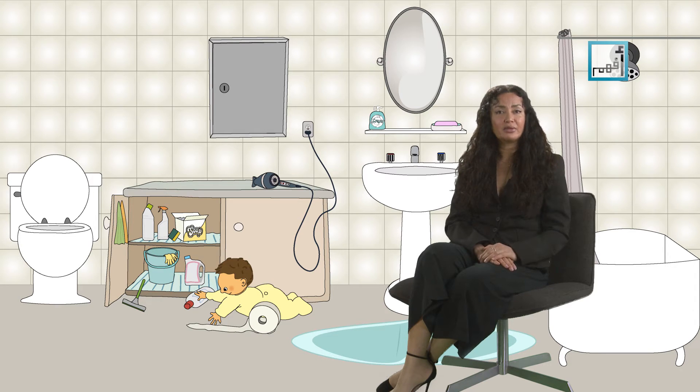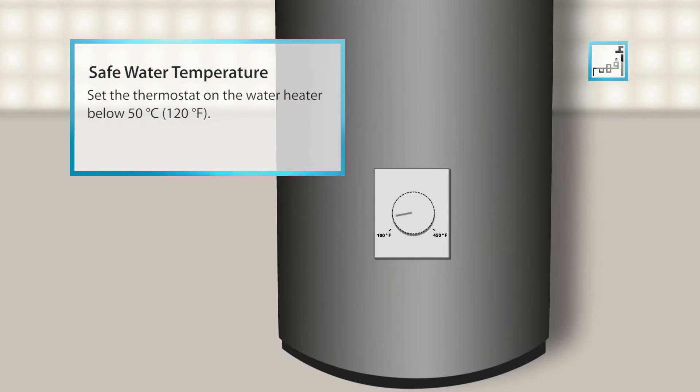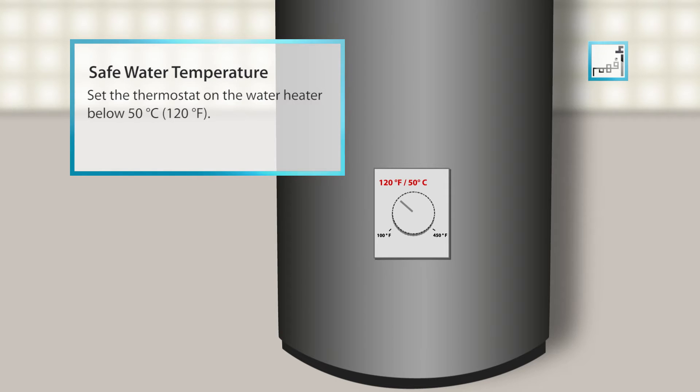This episode is about bathroom safety, so here we go. Set the thermostat on the water heater below 120 degrees Fahrenheit or 50 degrees Celsius.